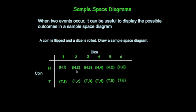So you've got a head and a 1, head and a 2, head and a 3, head and a 4, head and a 5, head and a 6, a tail and a 1, a tail and a 2, a tail and a 3, a tail and a 4, a tail and a 5 and a tail and a 6. So this diagram really clearly outlines all the possible outcomes you can get whenever you roll the dice and flip the coin.